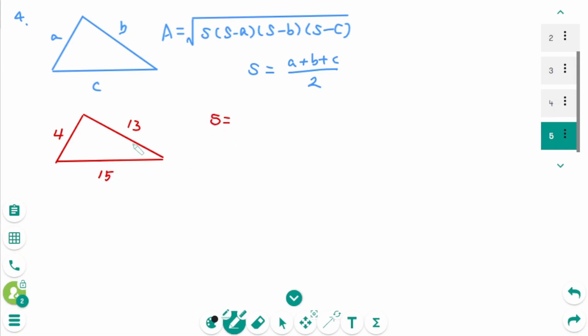Then S equals 4 plus 13 plus 15 over 2, equals 32 over 2, which is 16.